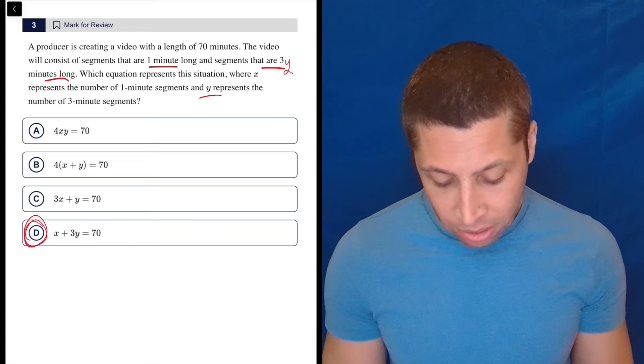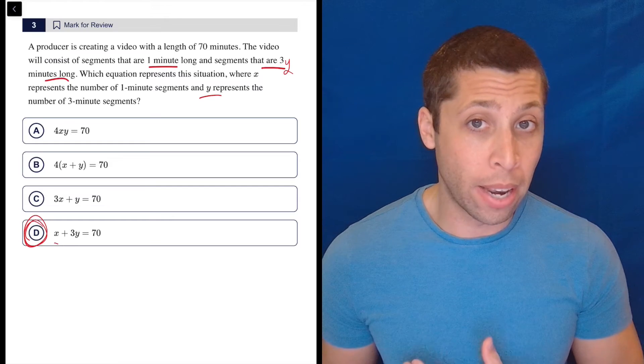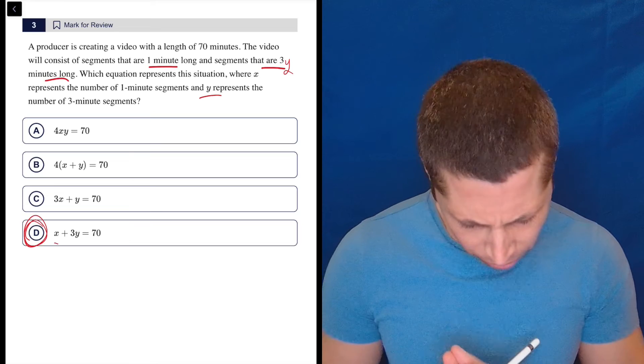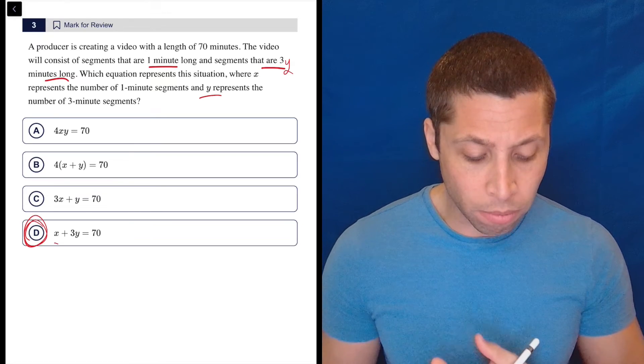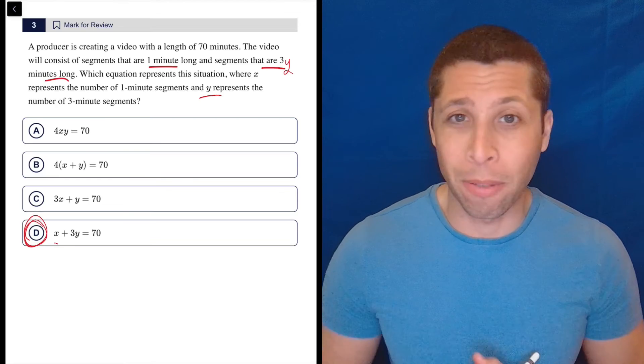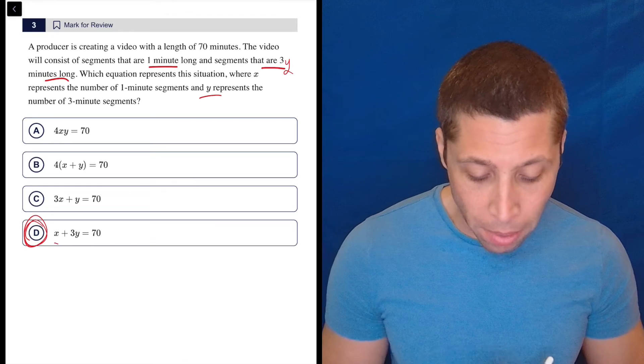I only see it in choice D. And the other part checks out, right? The X would be multiplied by one because that's the rate or the amount that each of the one minute long videos is going to be. But we wouldn't bother to put a one in front of the X because in math, when we do that, it's just a waste of space. So we don't put ones in front of variables. So that's why it doesn't show up there.